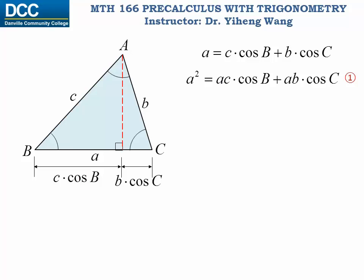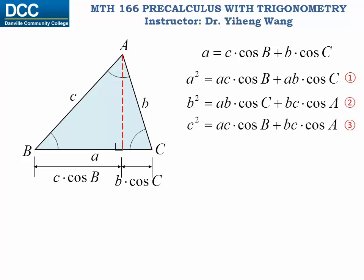We can draw the other two heights from angle b to base side b, and from angle c to base side c, and derive similar equations — equation two and equation three. Now let's take the first equation minus the second minus the third. On the left-hand side we have a² minus b² minus c², and on the right-hand side we have negative 2bc times cosine a.